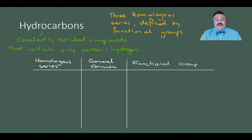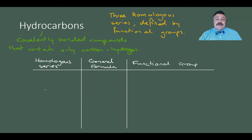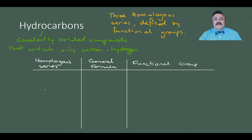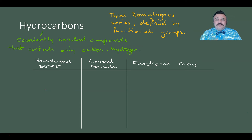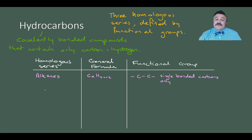There are three homologous series in our hydrocarbons, and they are defined by their functional groups. A functional group is the defining feature in an organic compound. In hydrocarbons, there's nothing extra aside from maybe a halogen — but halogenated hydrocarbons are for a later lesson. The three homologous series are defined by three possible functional groups.